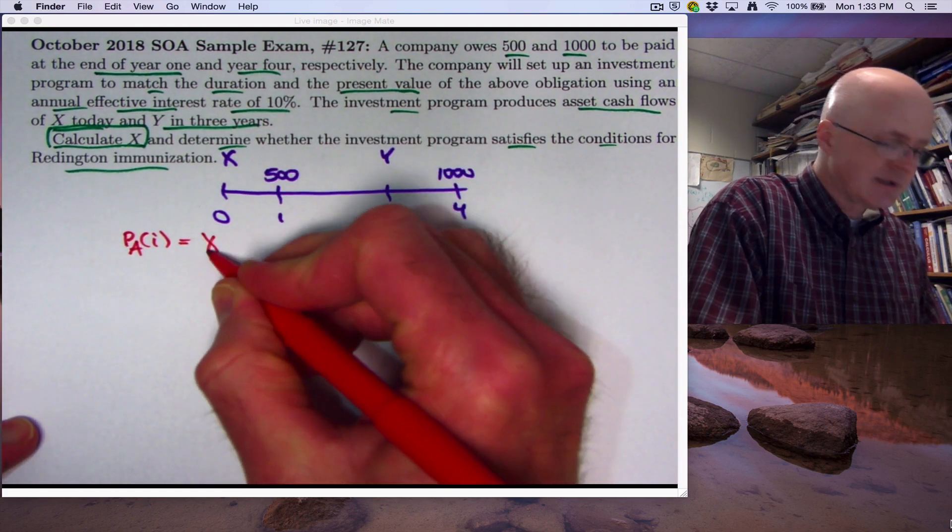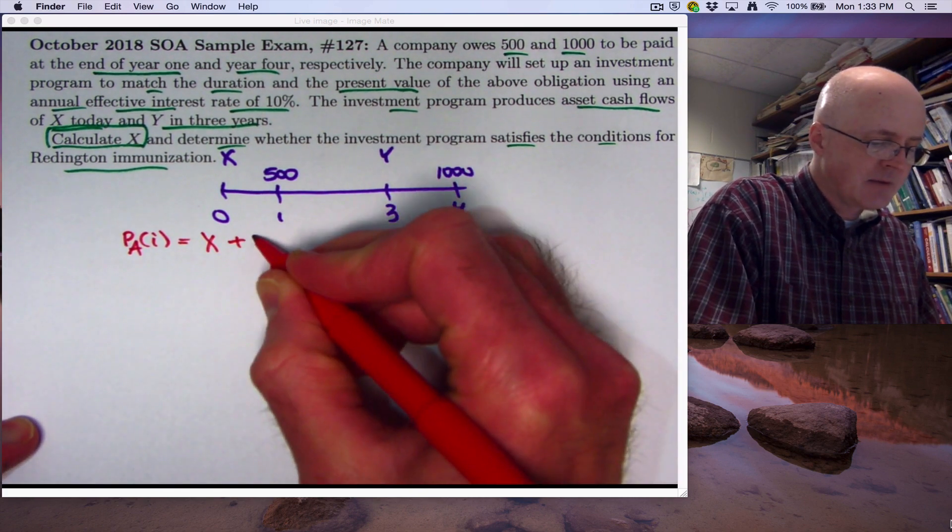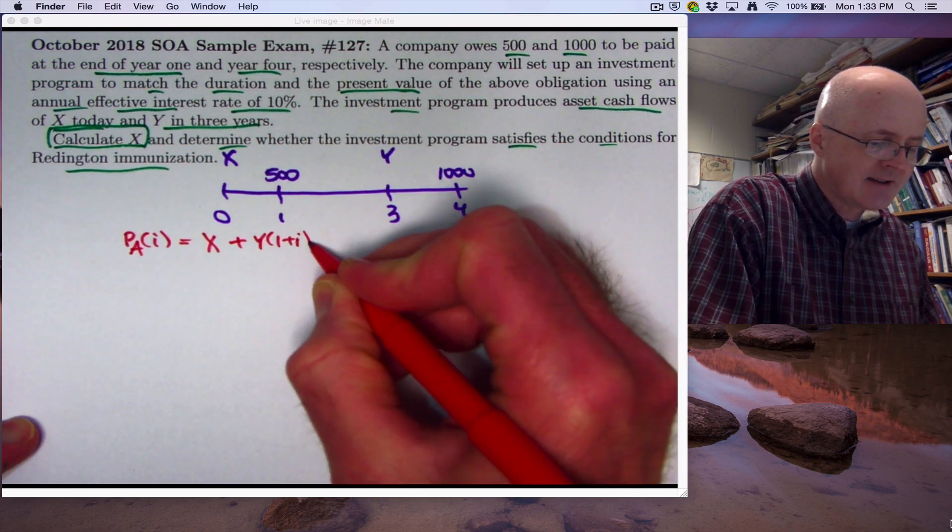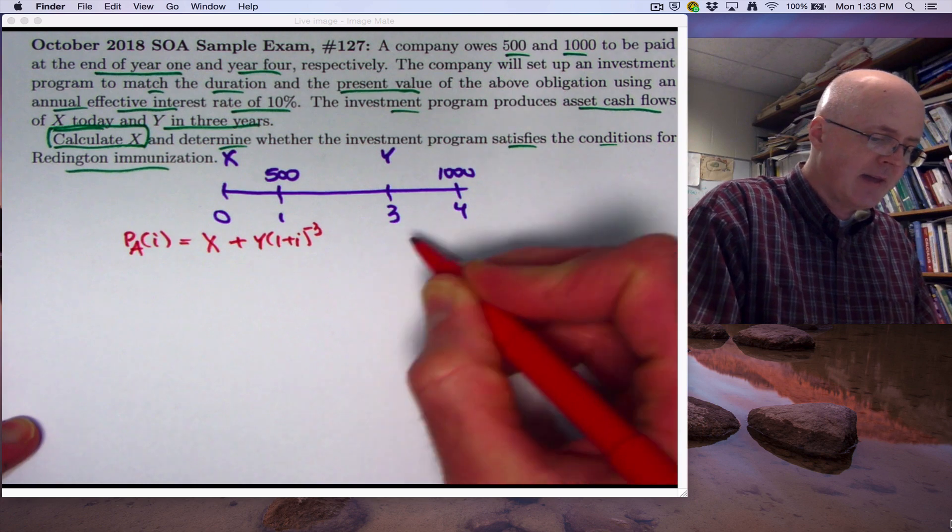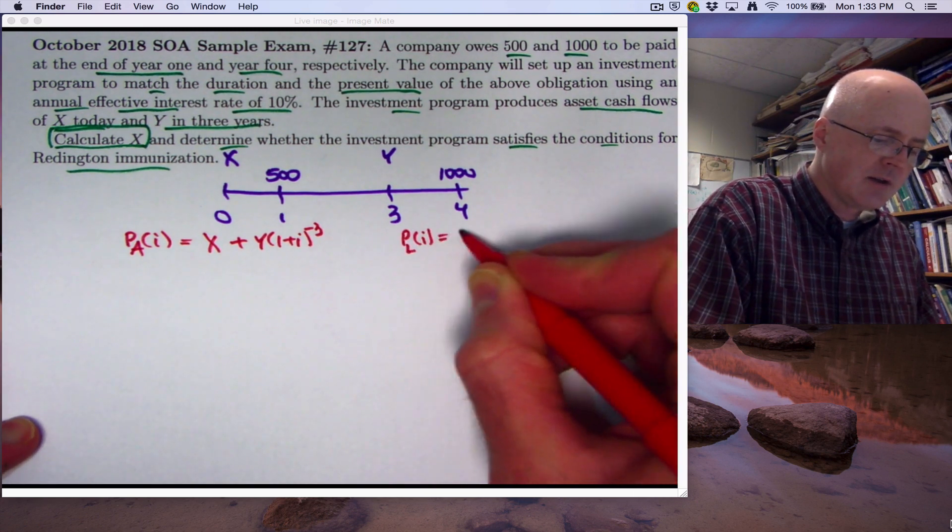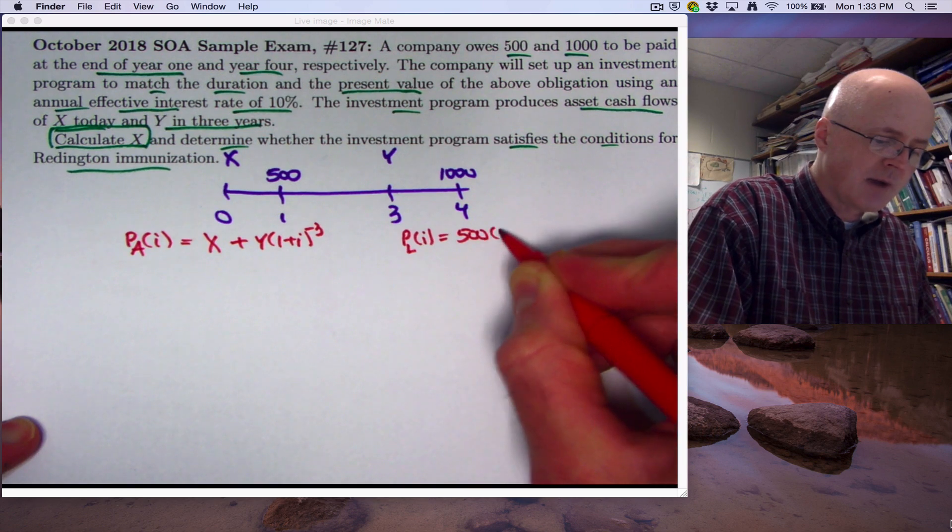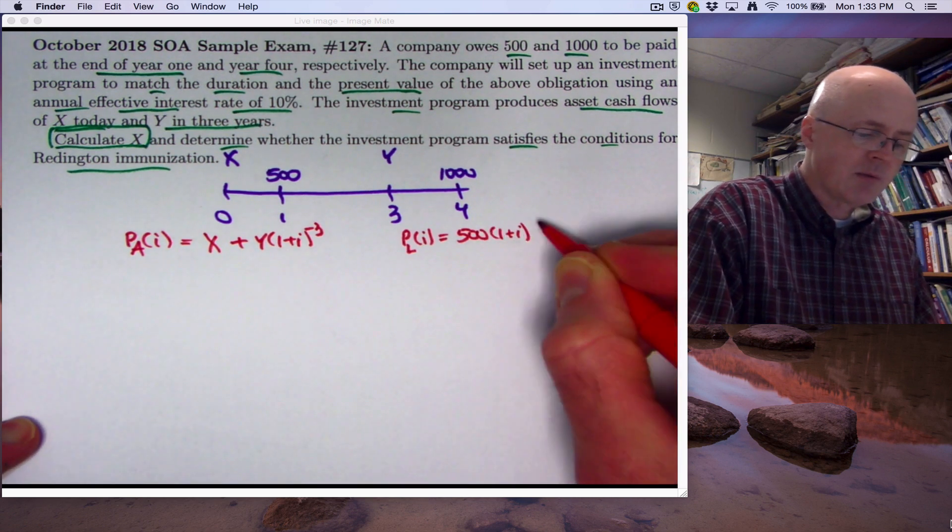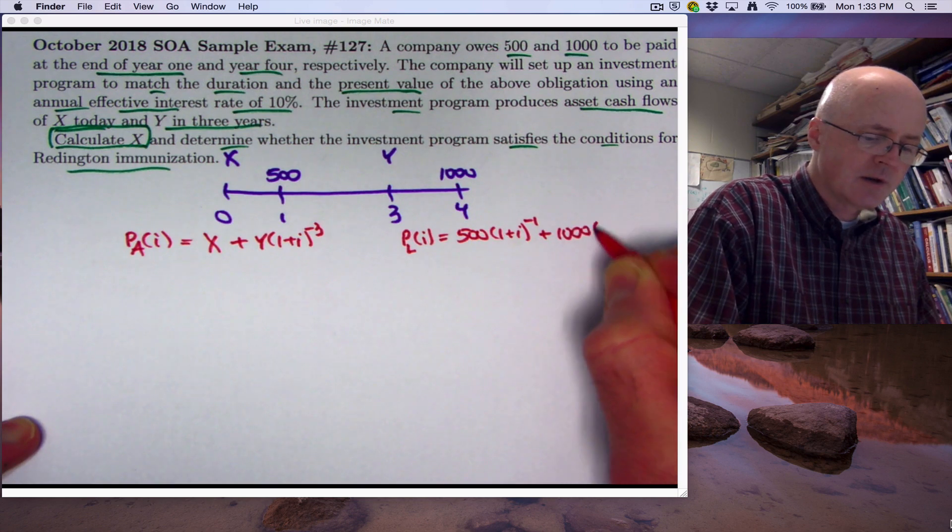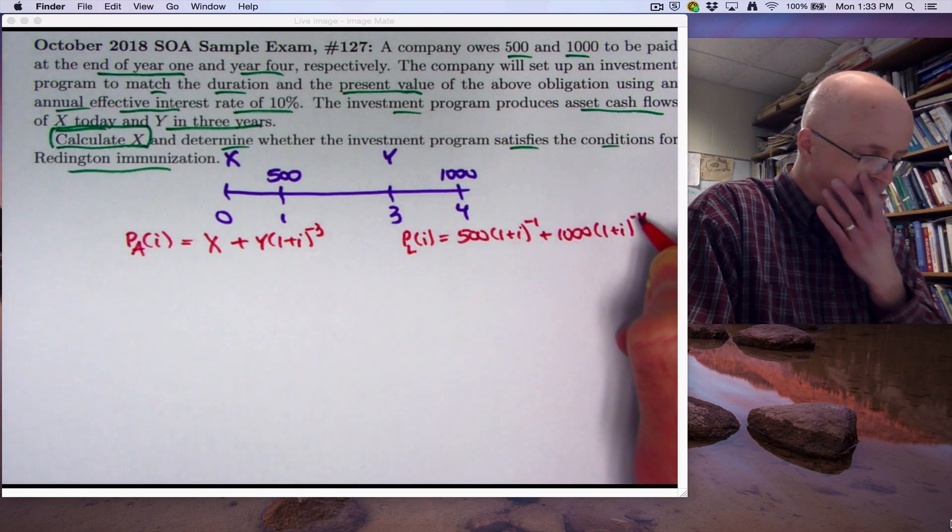So you've got the present value of the asset cash flow as a function of an arbitrary interest rate. You want to think of these as functions of i, so you can differentiate them when you solve these problems, but then you do the matching by plugging in the specific value of i that you're talking about. x is already at time zero, it does not need to be discounted. y is at time three. Multiply that by v cubed, which is one plus i to the negative three. And then the present value of the liability cash flow as a function of i, you have 500, which needs to come back by one year, multiplied by one plus i to the negative one. And the 1000 needs to come back by four years, multiplied by one plus i to the negative four.